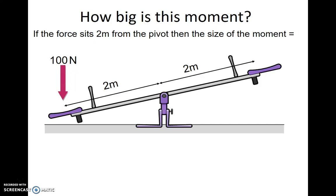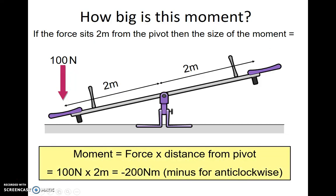If the force hits 2 meters from the pivot, then the size of the moment is - we'll use this equation. Moment equals force times distance from the pivot, which equals 100 newtons times 2 meters, which equals minus 200 newtons. The minus, remember, is to show that it's an anti-clockwise movement.